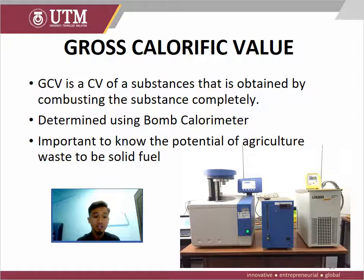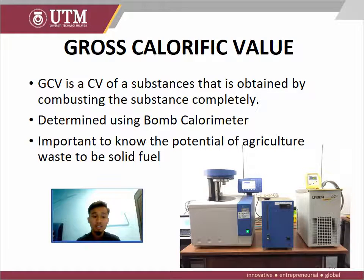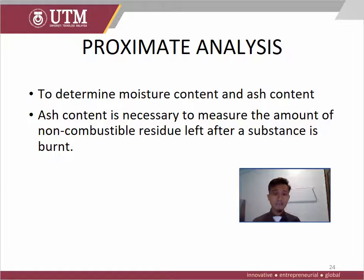The first step in preparation is to identify the gross calorific value (GCV). GCV is the calorific value of a substance obtained by combusting it completely, determined using a bomb calorimeter. It is important to know the GCV because it shows the potential of the agricultural waste to be used as solid fuel. The second step in preparing the feedstock is proximate analysis, which is used to determine the moisture content and ash content. Ash content measurement is necessary to determine the amount of non-combustible residue left after a substance is burned.